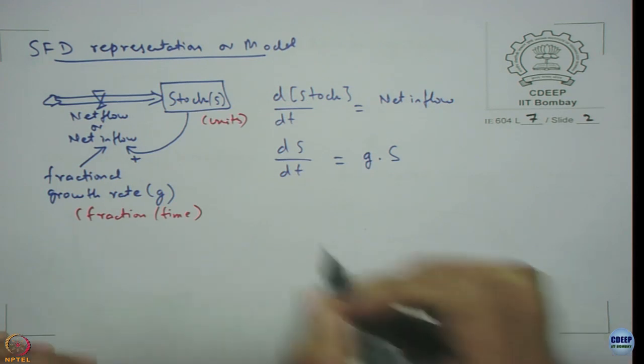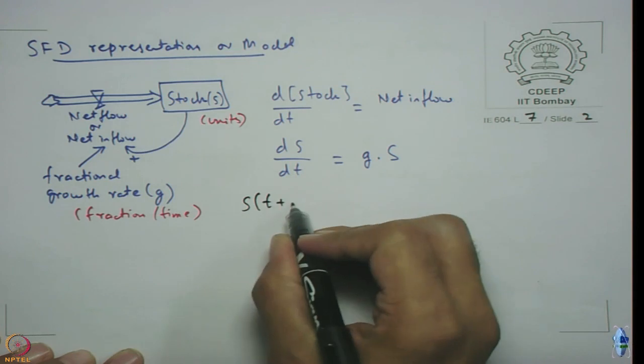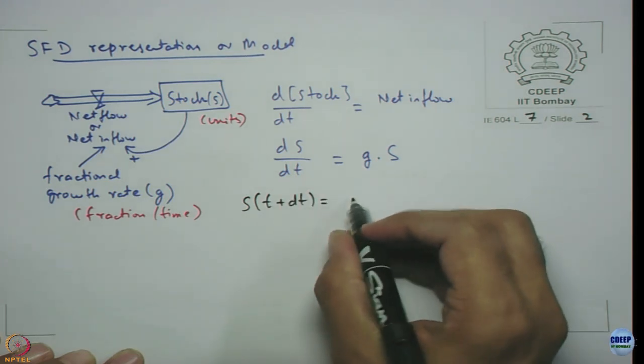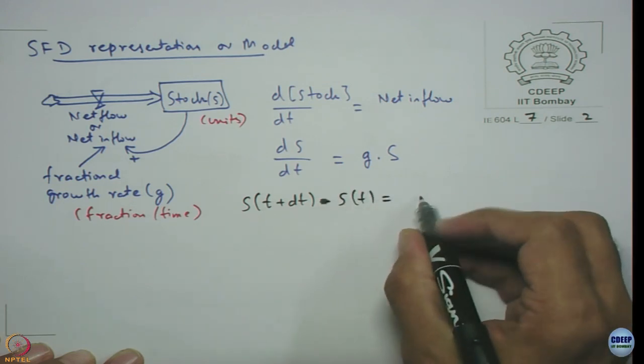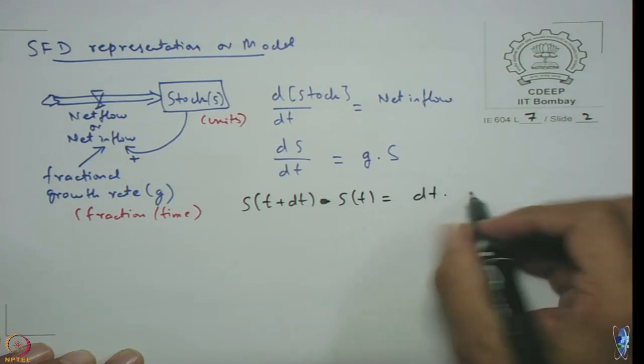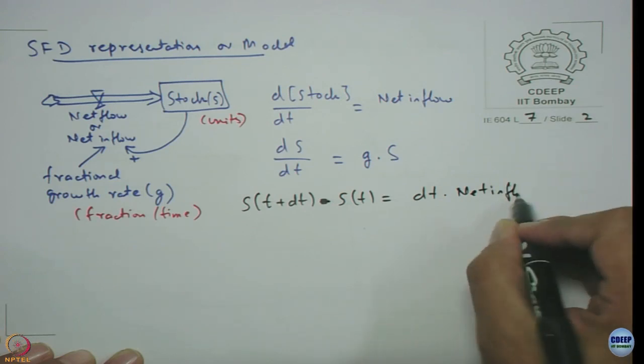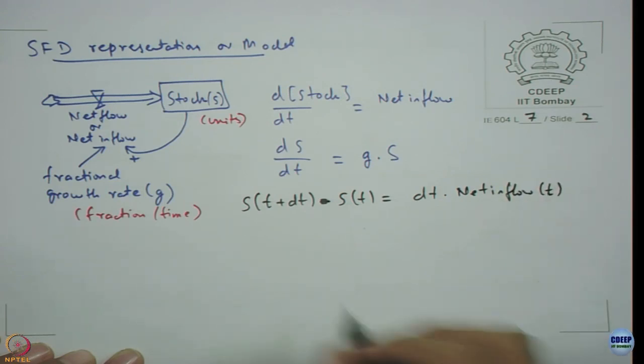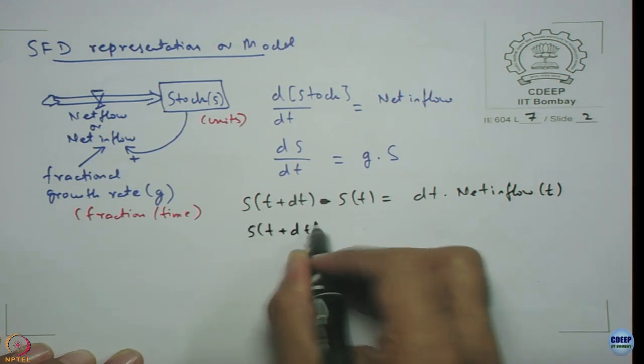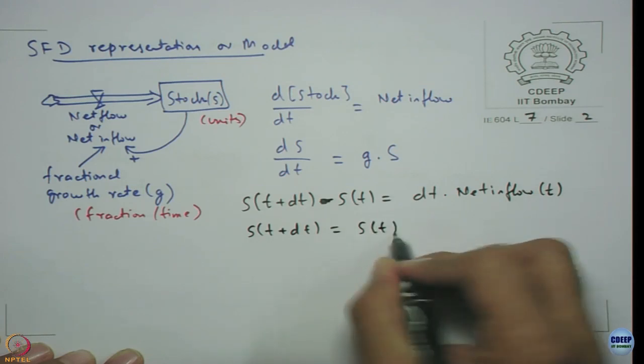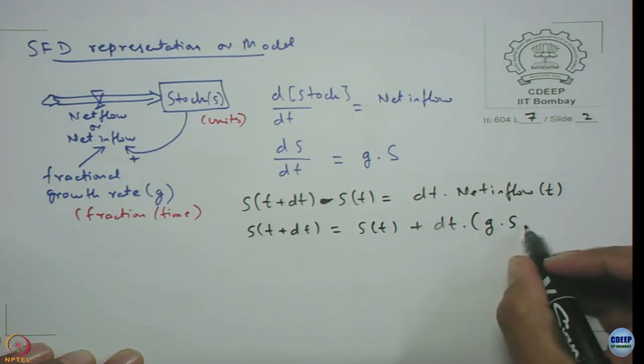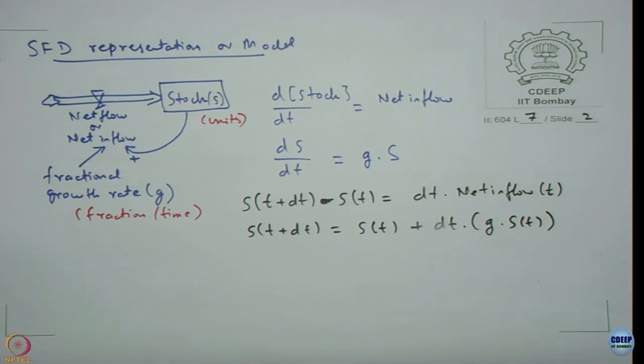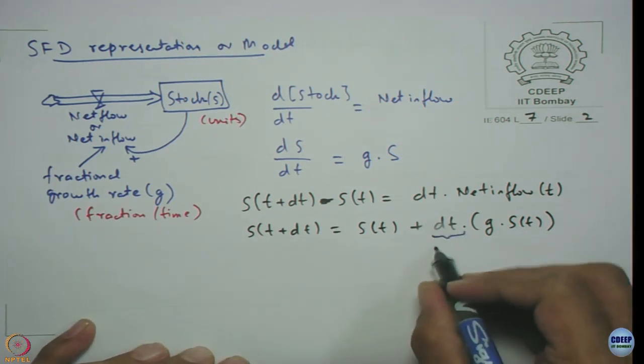If I want to actually simulate, what I want to do is stock at time t plus dt is stock at time t plus dt into net inflow at time t. Or stock at t plus dt is stock at time t plus dt into G into S at time t.